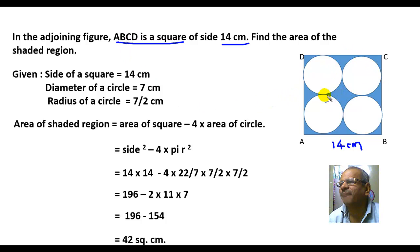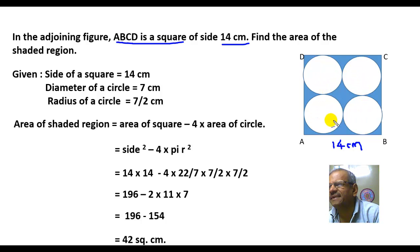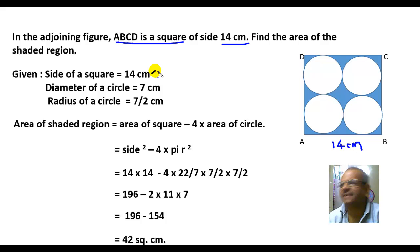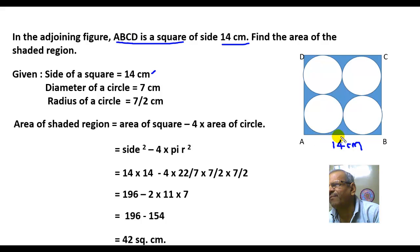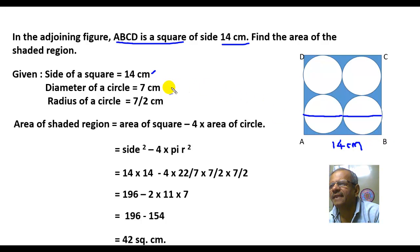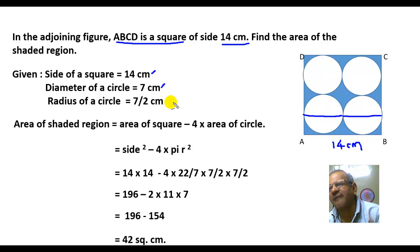The shaded region contains four circles inside the square. The side of the square is 14 centimeters. Therefore, the diameter of one circle is 7 centimeters — two diameters together make 14 centimeters. The radius, being half the diameter, is 7 by 2 centimeters.